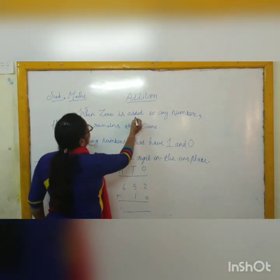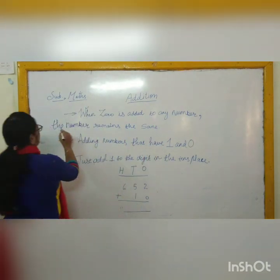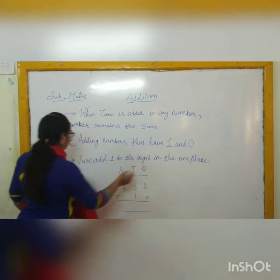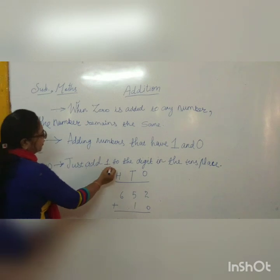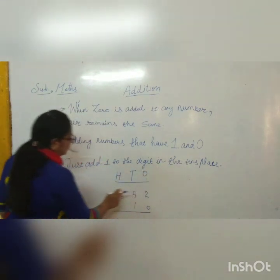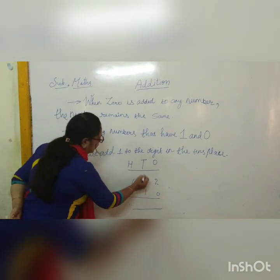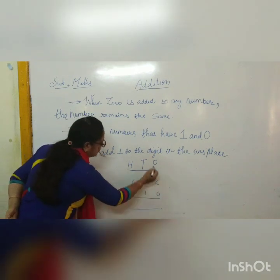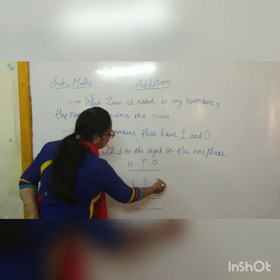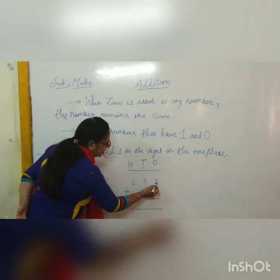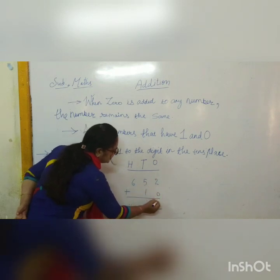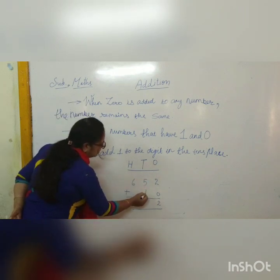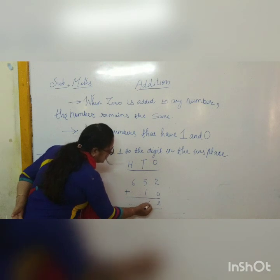When 0 is added to any number, the number remains the same. Adding numbers that have 1 ten and 0 ones — just add 1 to the digit in the tens place. So for 6 hundreds, 5 tens, 2 ones plus 1 ten, 0 ones — starting from the ones place, 2 plus 0 is 2. Then in the tens place, 5 plus 1 equals 6.